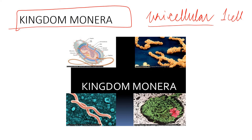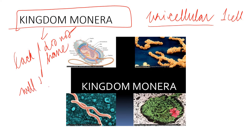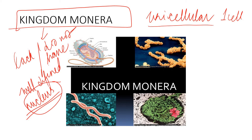The cells lack a well-defined nucleus. The genetic material in the cell lies in the cytoplasm. So Kingdom Monera organisms do not have a well-defined nucleus. The nucleus is like the master control - like the brain in our body. Similarly, the nucleus is the master control of any organism.